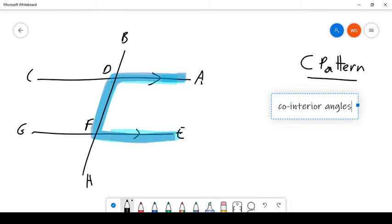So C pattern, here's what the C pattern tells us. It tells us if I know the measure of this angle here, which is actually angle ADH, so it's angle ADH, then I will be able to figure out the measure of this angle right here, which I'm just drawing in the corner here, angle EFB.